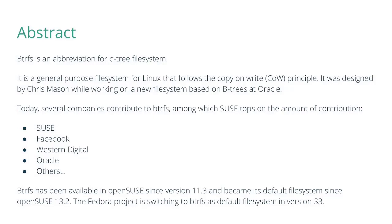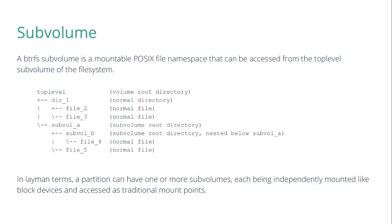Btrfs was adopted by OpenSUSE as early as 2010 in OpenSUSE 11.3, and it later became the distribution's default file system. Recently, the Fedora project announced that they are switching to Btrfs as the default file system, and that change will reflect in Fedora version 33. In this presentation we will talk about sub volumes and snapshots.